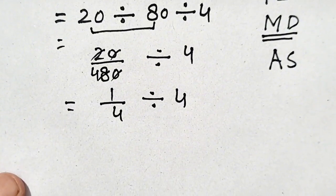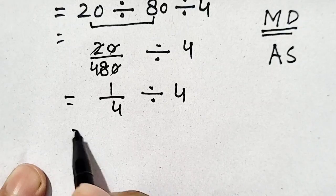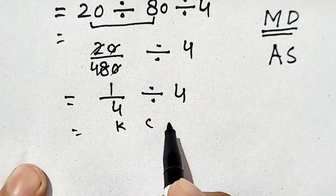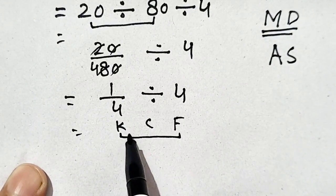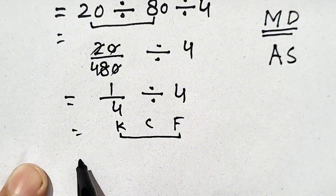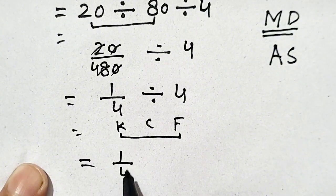By using the KCF rule. According to KCF, first 1 remains itself, so it will be 1 by 4.